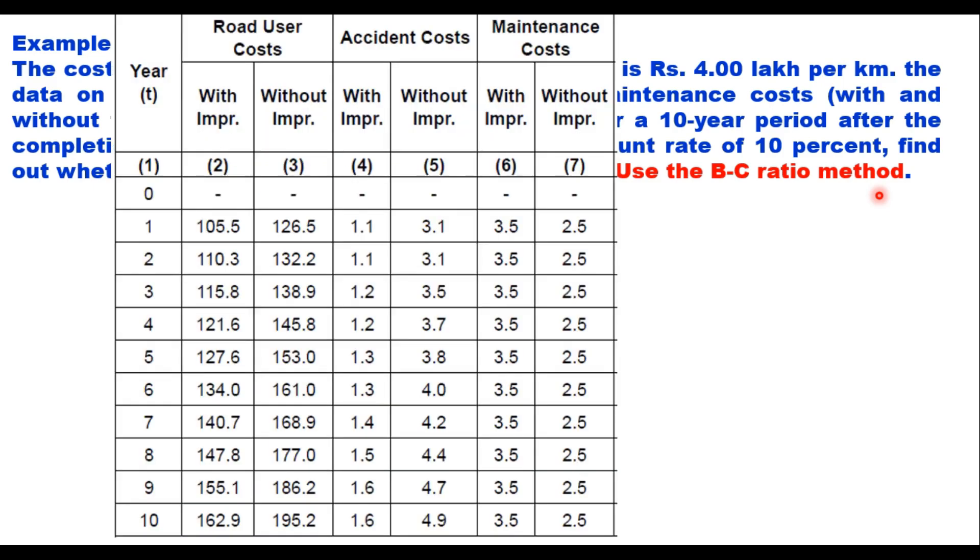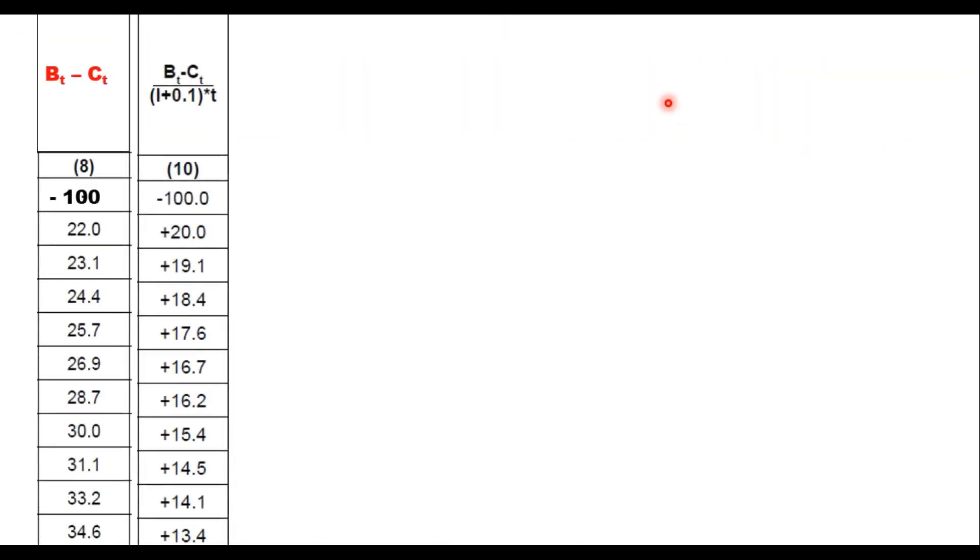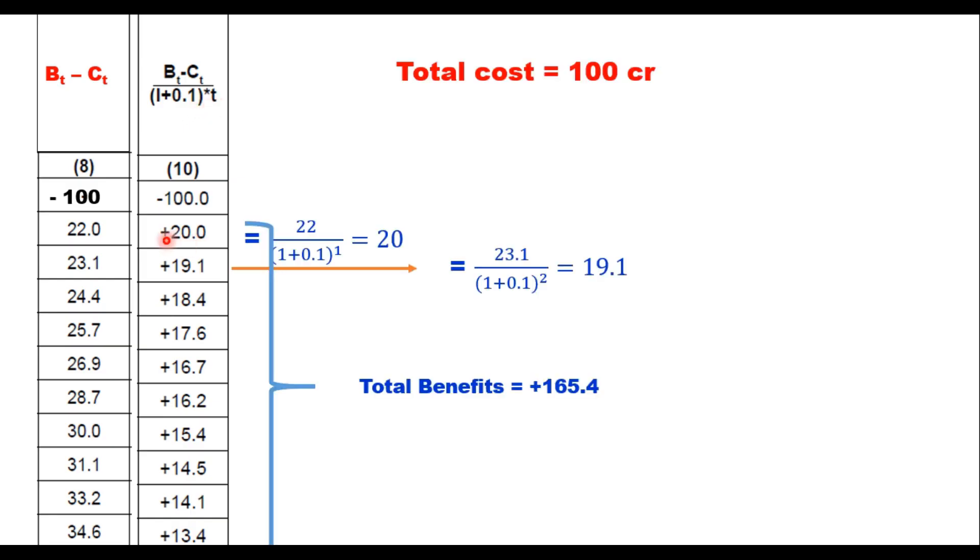And this table 1 is same as I showed you earlier. You have user cost, accident cost, maintenance cost without improvement and with improvement. So if you remember I added here 2 columns. One to calculate B minus C and another one is NPV. So let me start from there. That this is the Bt minus Ct. And this is Bt minus Ct upon 1 plus i, that is your 10%, to the power t.